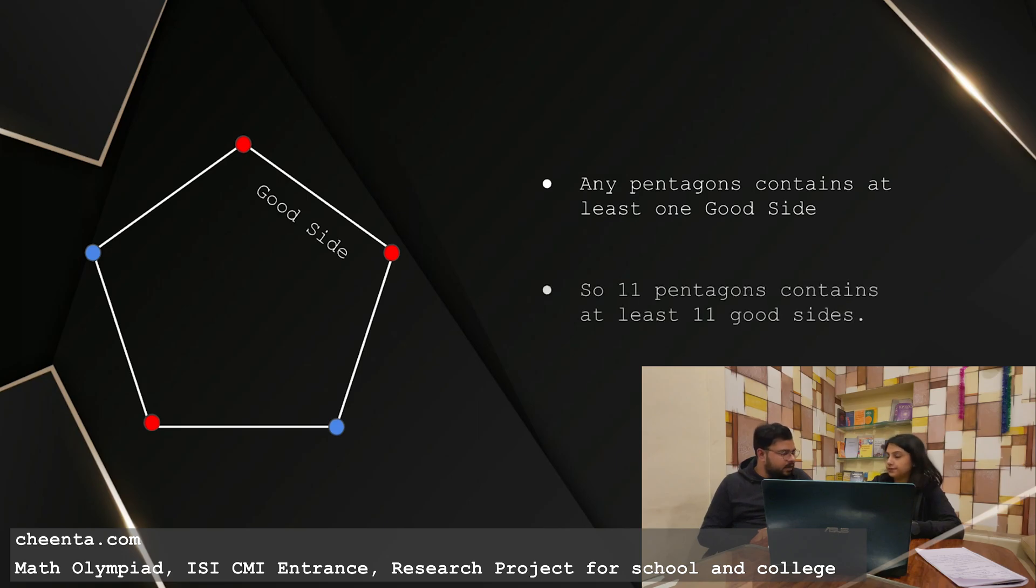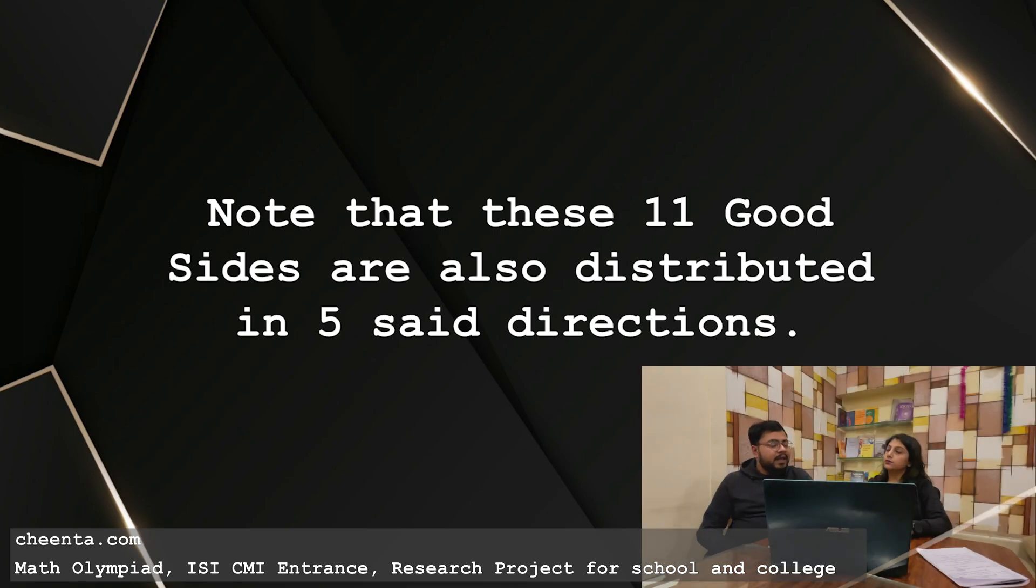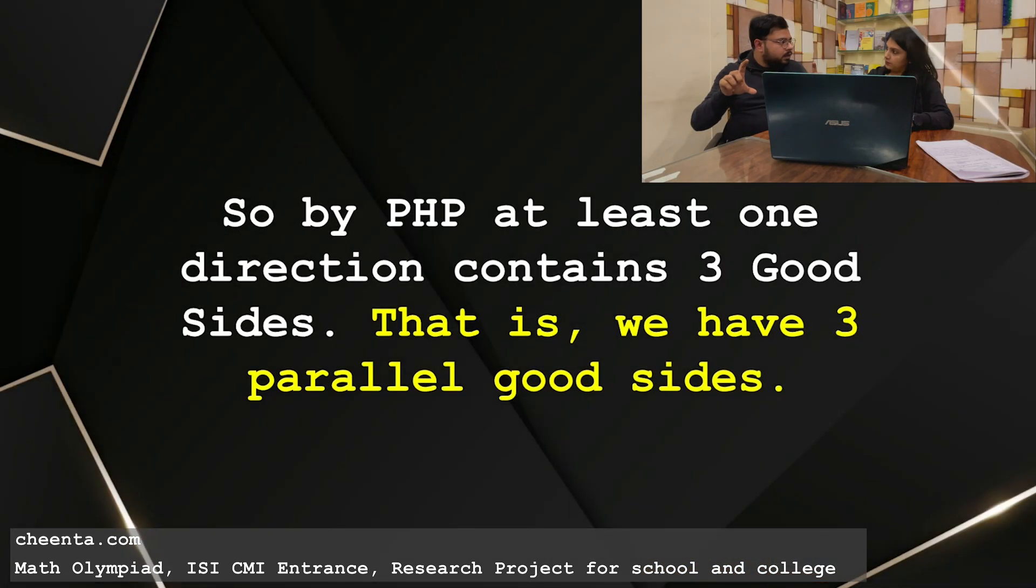And how many pentagons were there? 11. So in those 11 pentagons, there will be at least 11 good sides. Now let's go back to the previous concept. We found that there were five directions. And that sides were distributed on these five directions. So these 11 good sides, they are also distributed in these five directions. So again, we'll be applying PHP here. There are, think these 11 good sides are 11 pigeons for us and there are five directions. So these are our holes. If I want to distribute those 11 pigeons in five holes, the best I can do is I can keep two pigeons at each hole. But still there'll be one pigeon remaining. I have to put it in one of the holes.